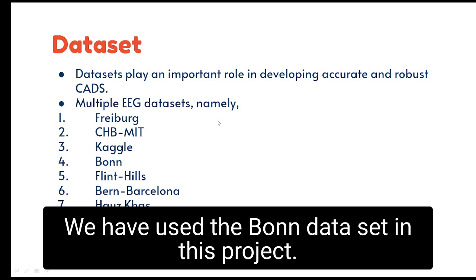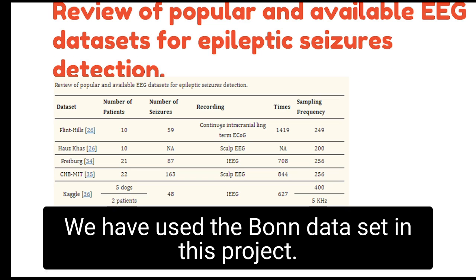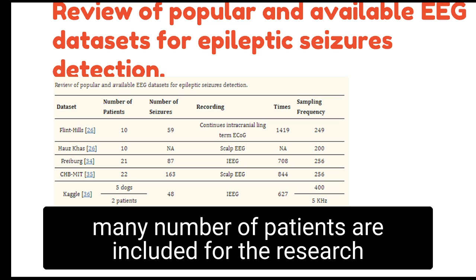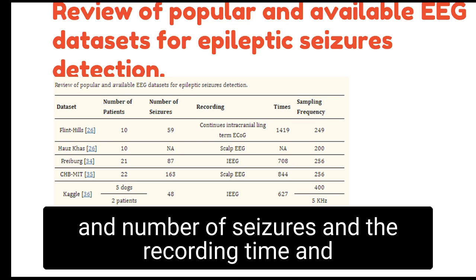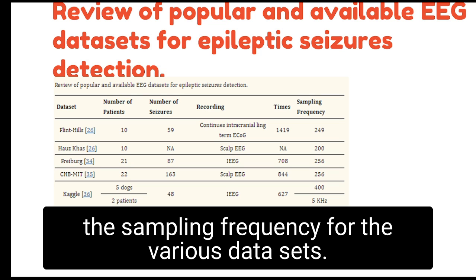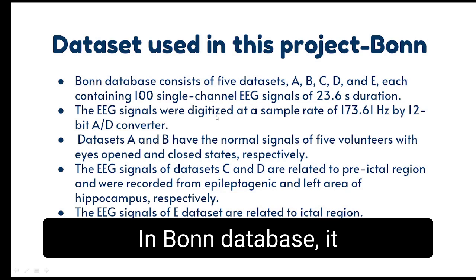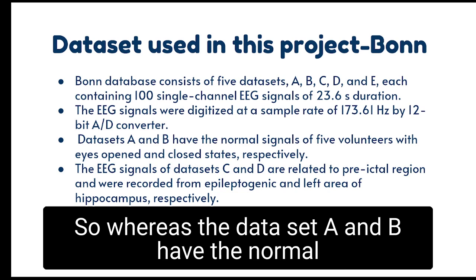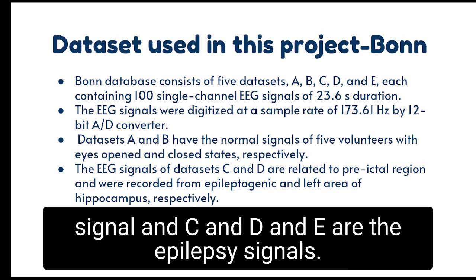We have used the Bonn dataset in this project. The Bonn database has five classes: A, B, C, D, and E. Datasets A and B contain normal signals, while C, D, and E are epilepsy signals. You can also get details such as the number of patients taken for research, number of seizures, recording time, and sampling frequency for the various datasets.